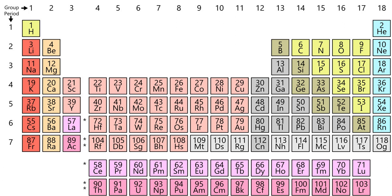Complicating the chemistry of the nonmetals is the first row anomaly seen particularly in hydrogen, boron, carbon, nitrogen, oxygen, and fluorine, and the alternation effect seen in arsenic, selenium, and bromine.